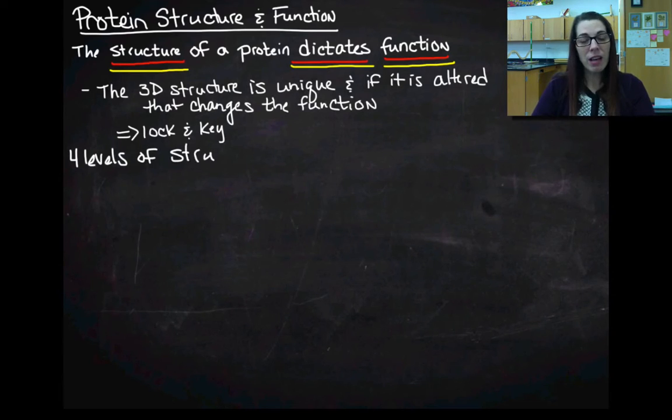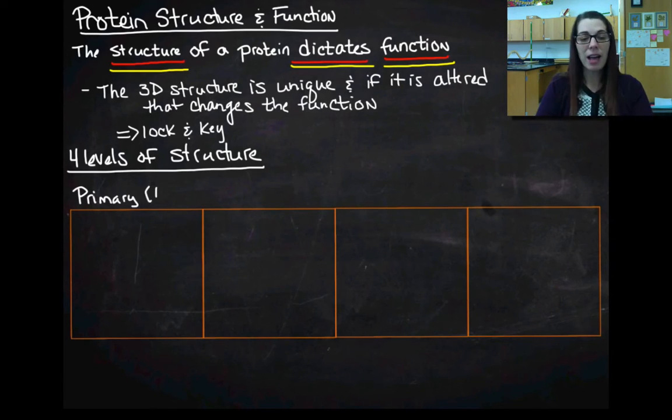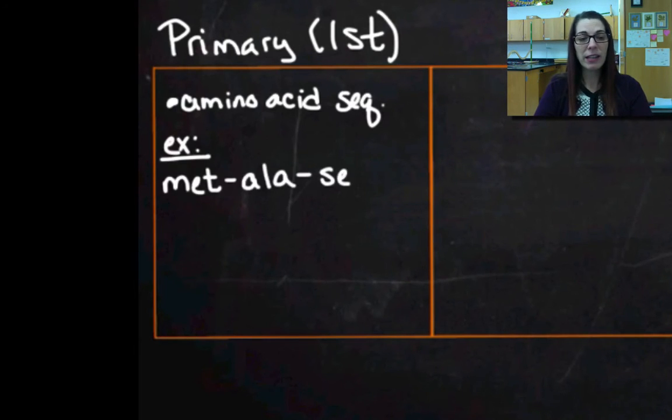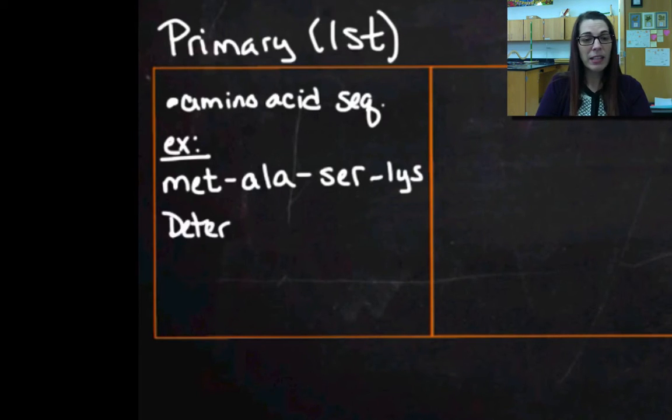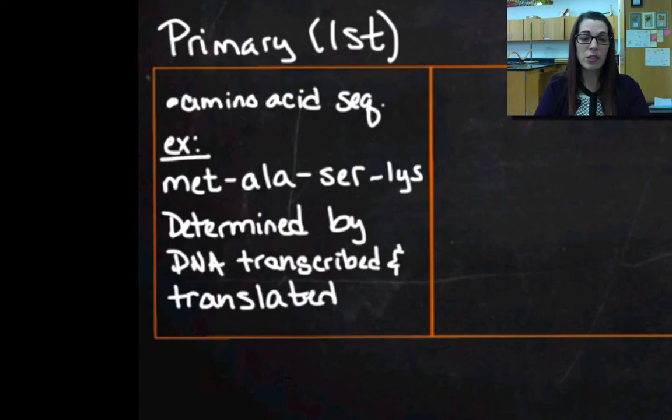So there are four levels of structure that we talk about in proteins, and we're going to talk about each of these individually. The first level is the primary level, and the first level of protein structure is really easy. We've talked about it a bunch already. It's just the sequence of amino acids. So for example, my sequence could be methionine, alanine, serine, lysine, and that's it. I mean, it would be a lot longer because proteins are a lot bigger than four amino acids. But there's my example sequence, and that is determined by the DNA. So your DNA is transcribed and then translated, and that determines the order of the amino acids in a protein.